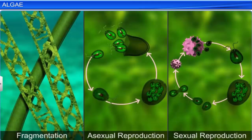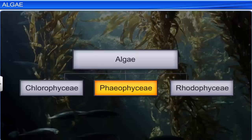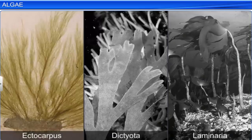Green algae can reproduce vegetatively through fragmentation, and asexually by flagellated zoospores, as well as sexually. Phaeophyceae is another class of algae, and Ectocarpus, Dictyota, and Laminaria are some of its members.